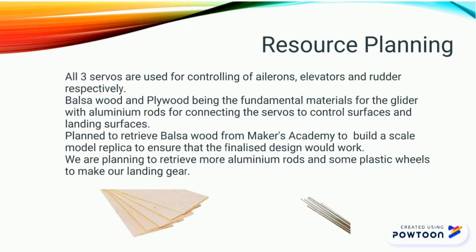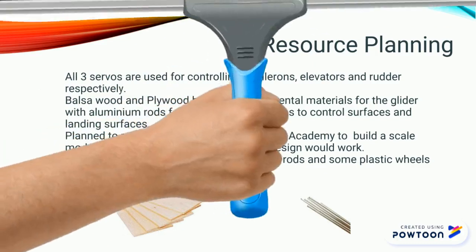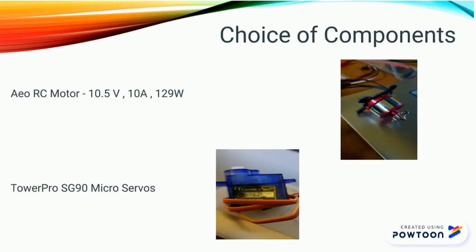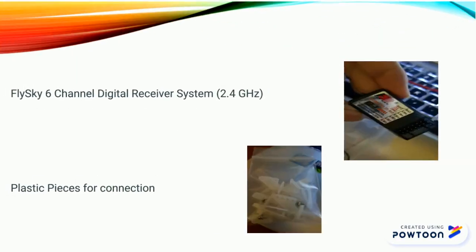All three servos will be used to control our aircraft, and balsa wood and plywood will be used as the fundamental materials for our glider, with aluminum rods for connecting the servos to control surfaces and landing gear. Our choice of components are the Aero RC motor at 10.5V, 10A, and 129W, TowerPro SG90 micro servos, a FlySky 6-channel digital receiver system at 2.4GHz, and plastic pieces for connection.